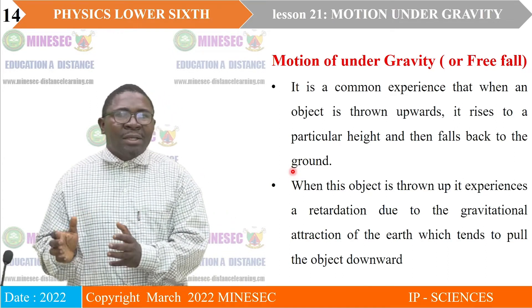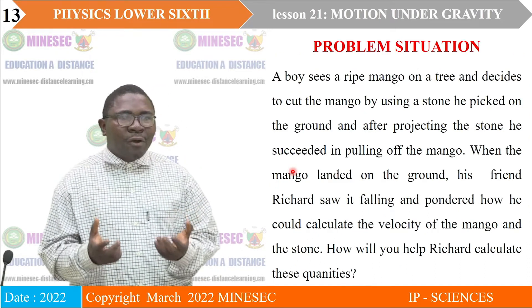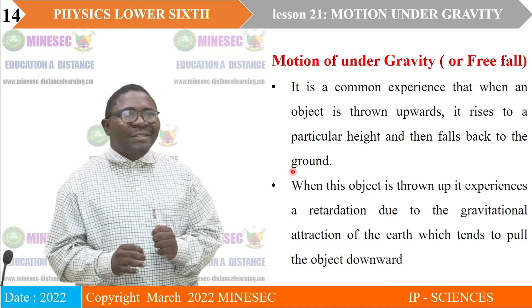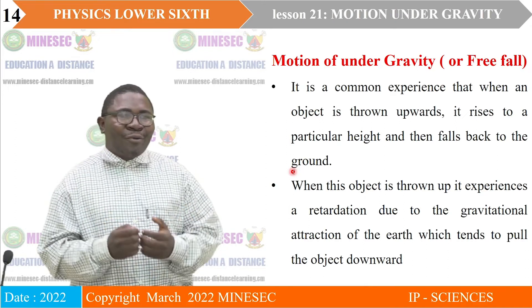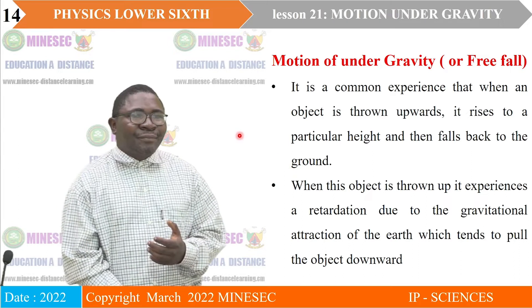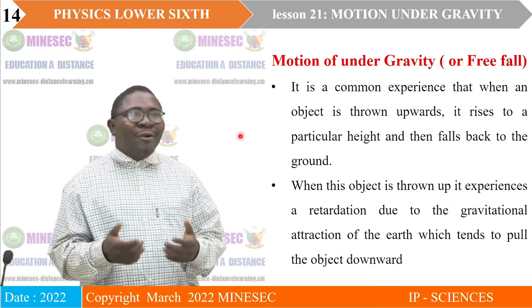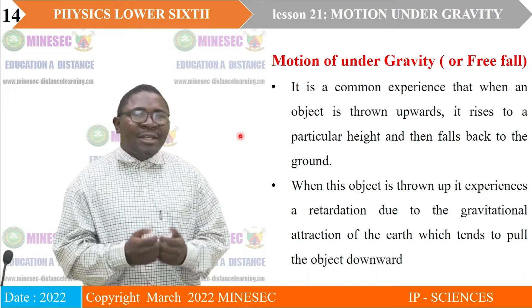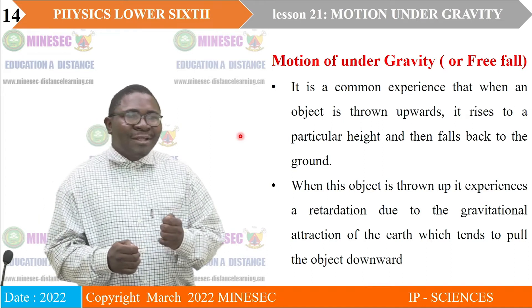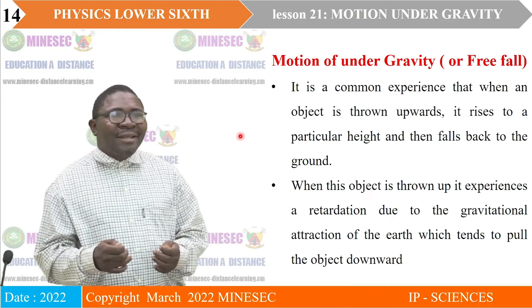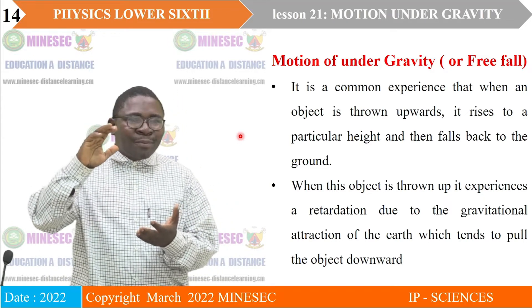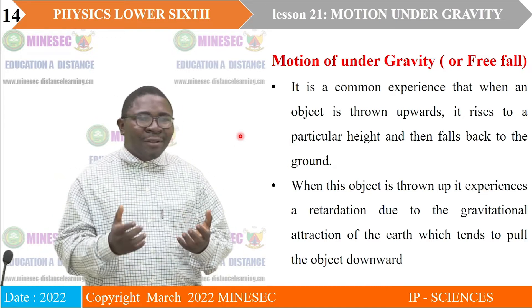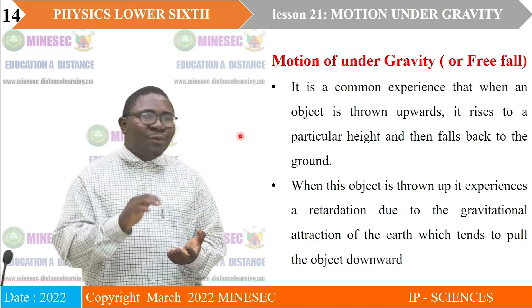We use equations of motion under gravity, since we are talking about falling objects. Motion under gravity — in other words, free fall motion of bodies. It is a common experience that when an object is thrown upward, it will rise and then fall back to the ground. When this object is thrown up, it experiences a retardation — the speed reduces as the object moves up, due to the gravitational attraction of the earth pulling the object downward.